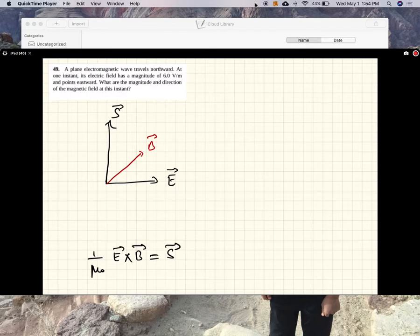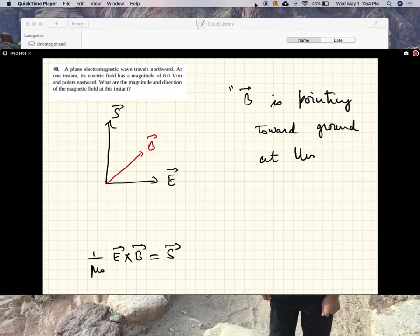But B is pointing toward the ground at this instant. And in the next half cycle it will be pointing toward the sky.